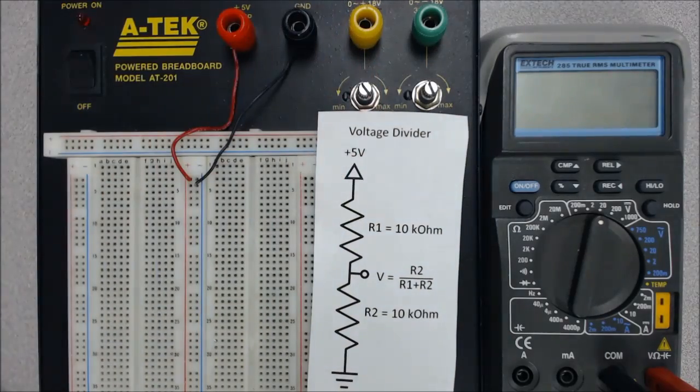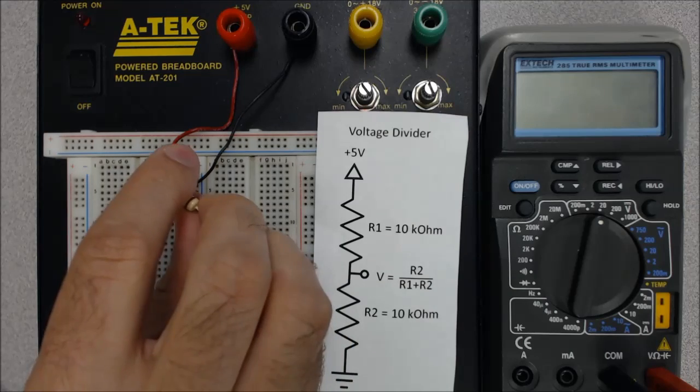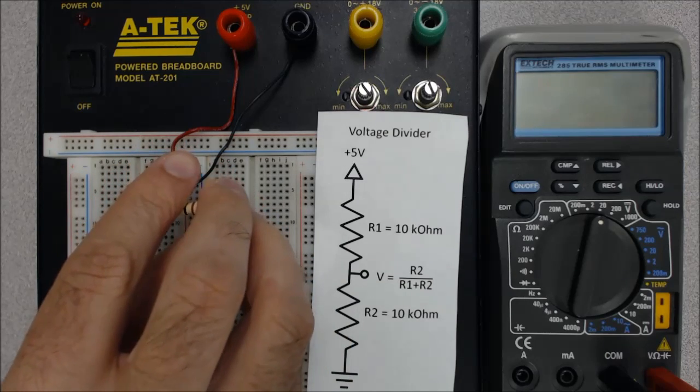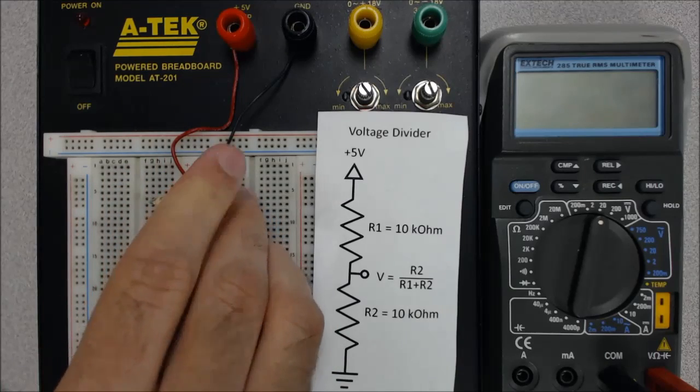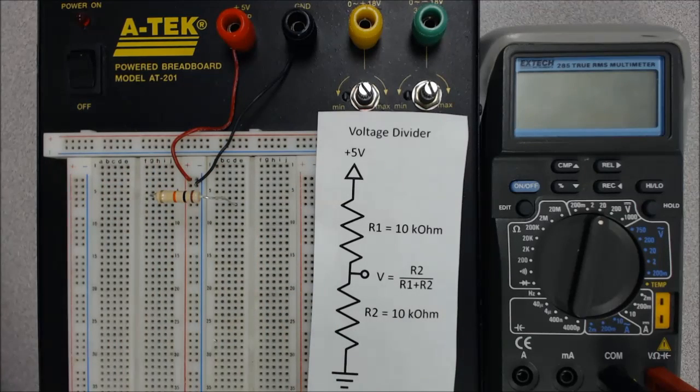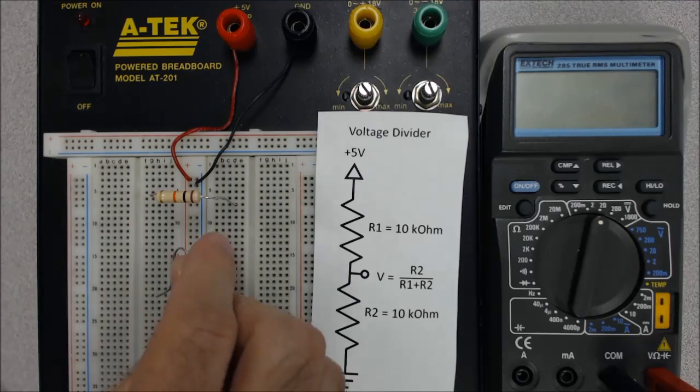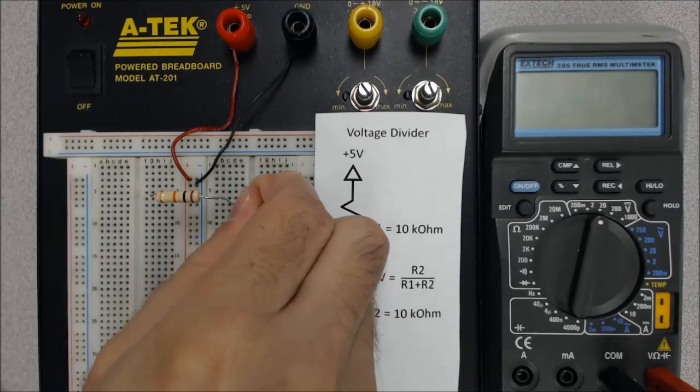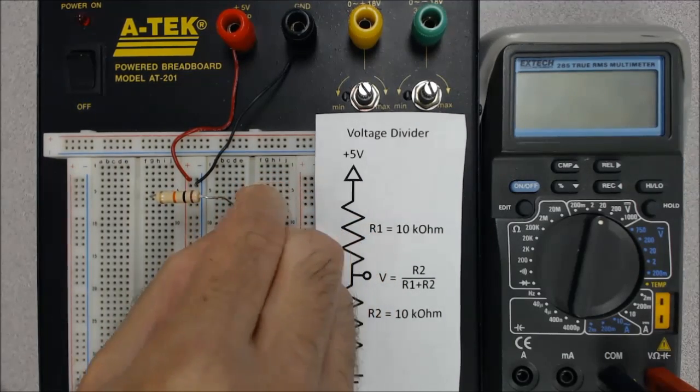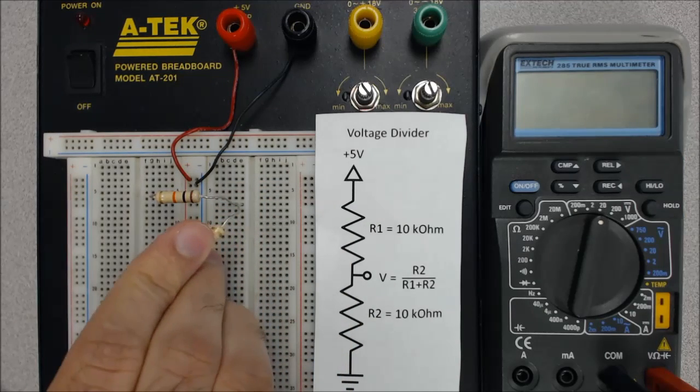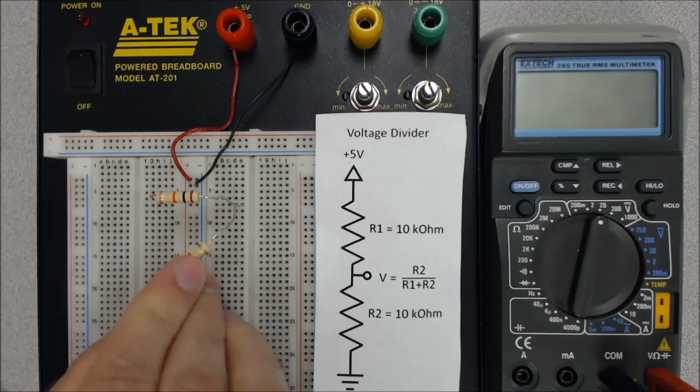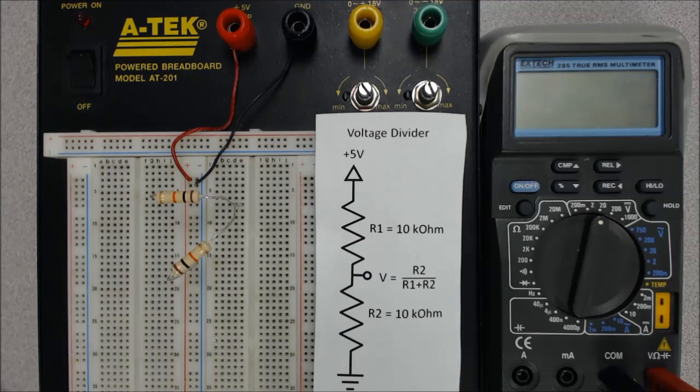So to build this voltage divider, all I have to do is I'm going to take my first 10K resistor and put one end in the 5 volt rail and the other side in one of the short buses. And then I'm going to take another 10 kilohm resistor and put one side in the same short bus, which is just this line on the breadboard, as I put the other resistor in, and I'll put the other side to ground. So there's our voltage divider.